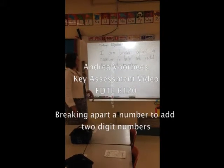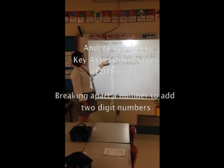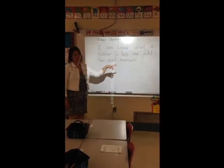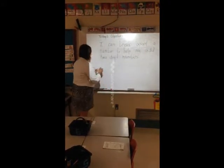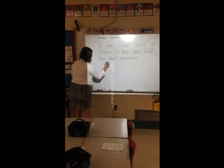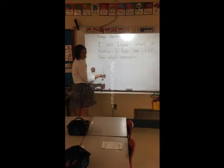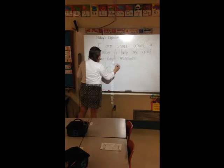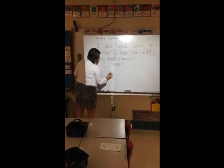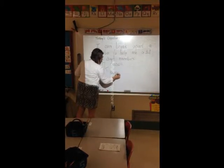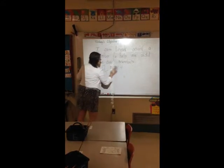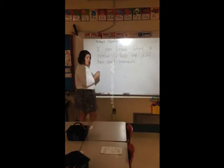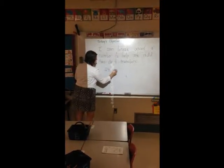Today in math we are going to learn how to break apart a number to help add two-digit numbers. Recently we've been talking about how we can take a ten stick and break it apart into ones, like five ones and five ones, to help us add. We're going to do the same thing today, only with two-digit numbers, like 23 plus nine.